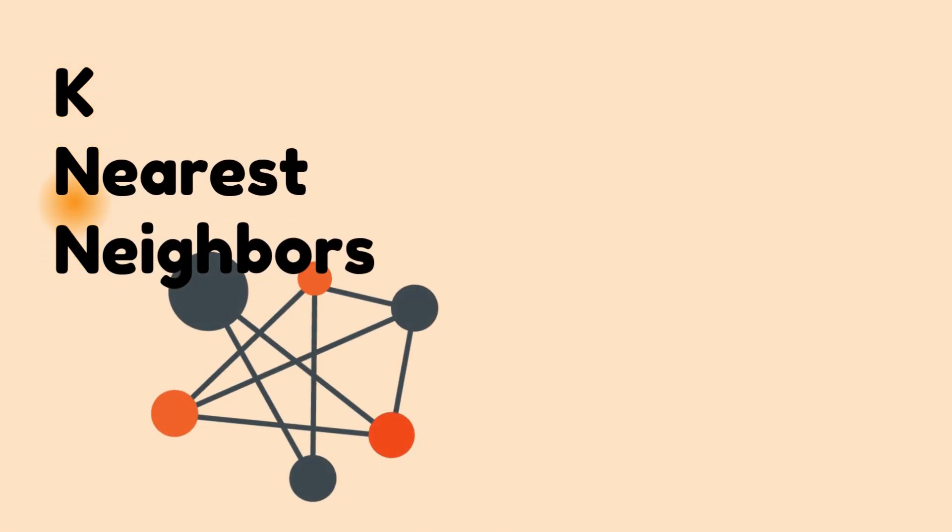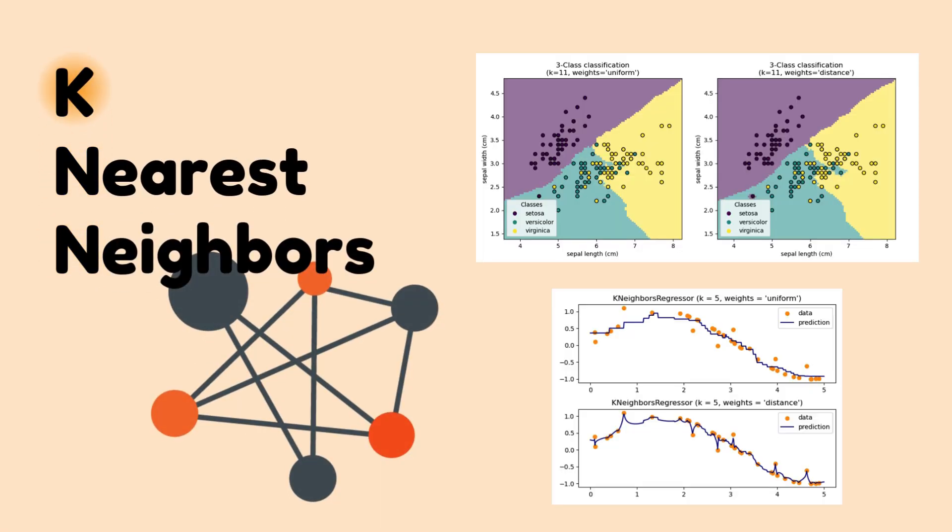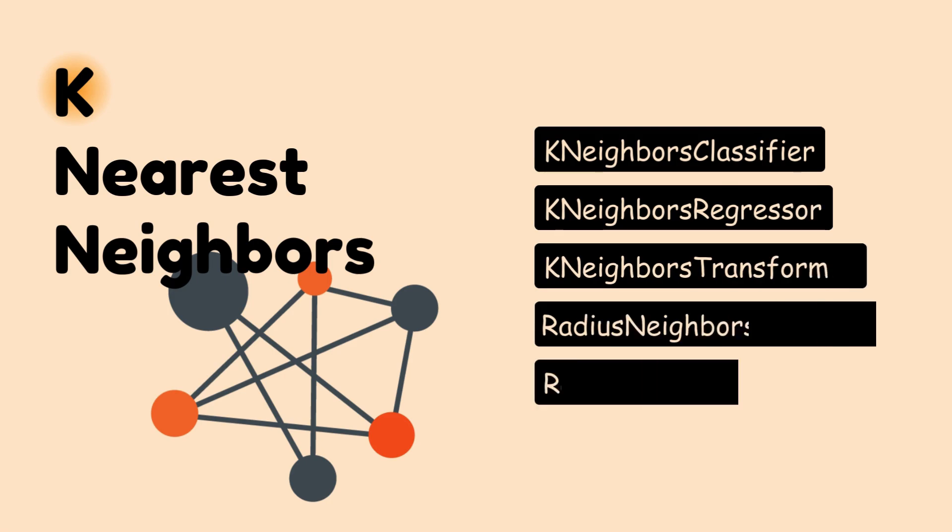K-nearest neighbors, one of the simplest algorithms used for classification and regression tasks. It includes a whole bunch of classes, but today, we'll go with the K-neighbor classifier.